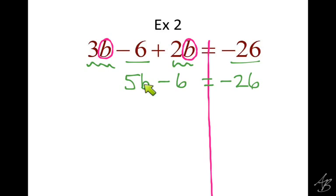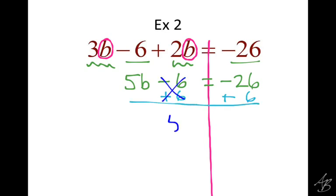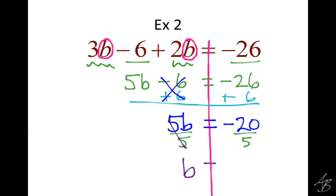I want to get that B by itself, so I need to get rid of the 5 and the negative 6. Which one should I do first? Negative 6 — so we add 6 on both sides. The minus 6 and the plus 6 cancel, giving us 5B. On the right side, negative 26 plus 6 is negative 20. Then we need to get rid of the 5 by dividing by 5. When those 5s cancel, we get B equals negative 4.